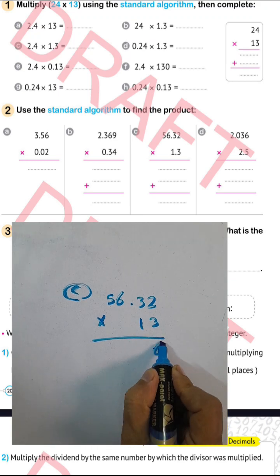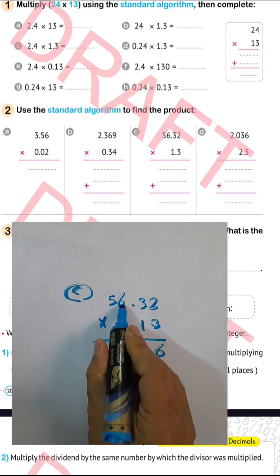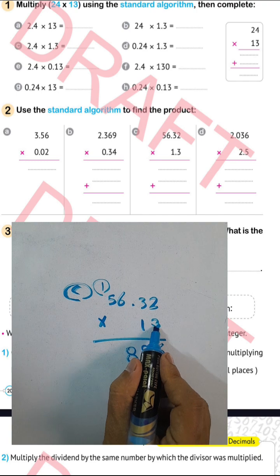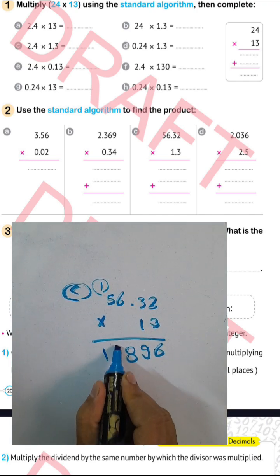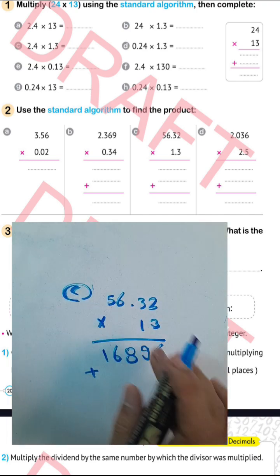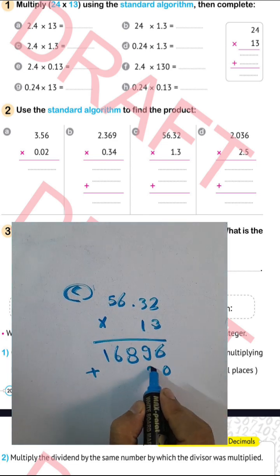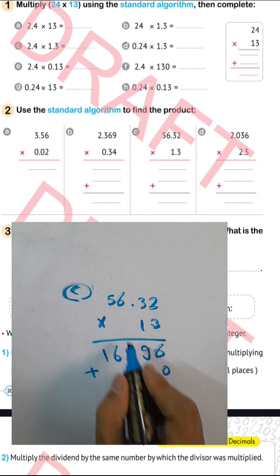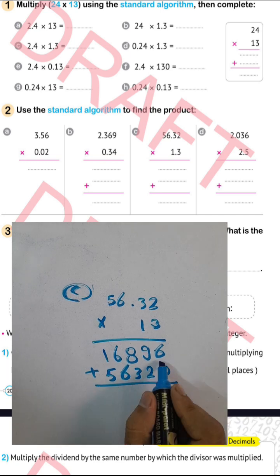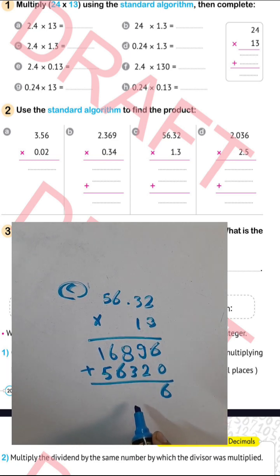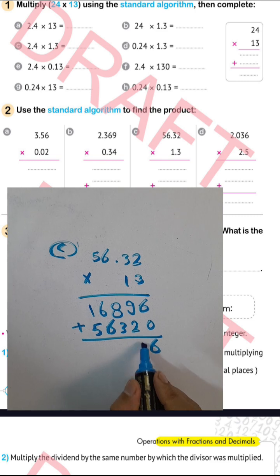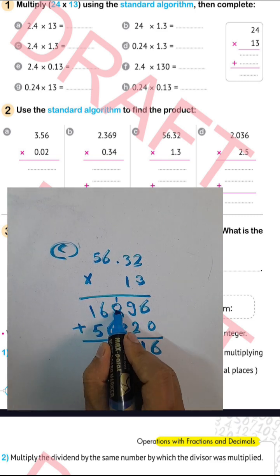Computing 5632 times 3: 3 times 2 equals 6; 3 times 3 equals 9; 3 times 6 equals 18, write 8 carry 1; 3 times 5 equals 15, plus 1 equals 16, write 6 and a zero. Then for the tens row: 1 times 2 equals 2; 1 times 3 equals 3; 1 times 6 equals 6; 1 times 5 equals 5. Adding: 6 plus 0 equals 6; 9 plus 2 equals 11, write 1 carry 1.